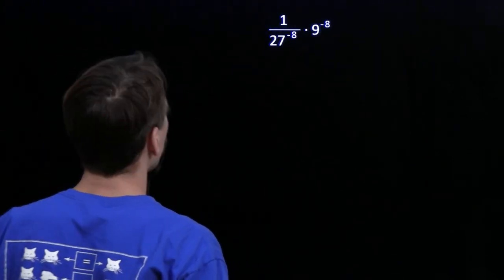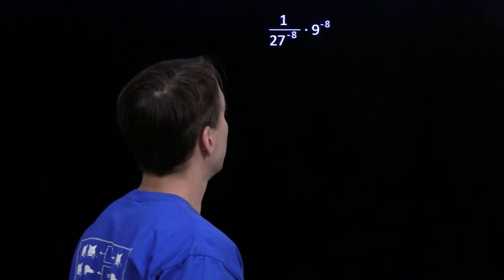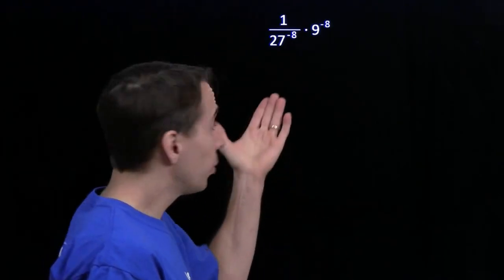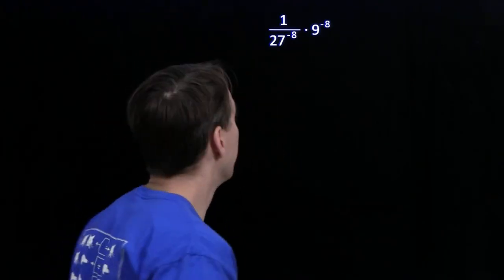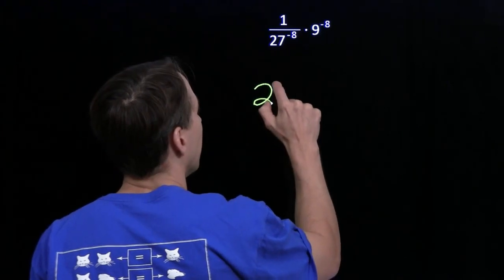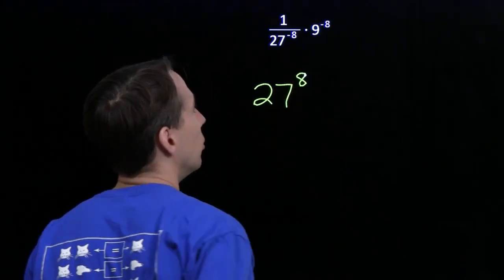We've got the reciprocal of 27 to the minus 8 times 9 to the minus 8. Well, now I know how to deal with the reciprocal of a negative power. We can just write that as 27 to the 8th.